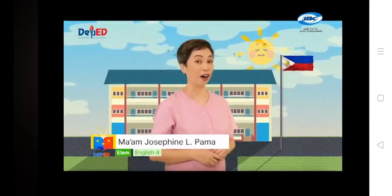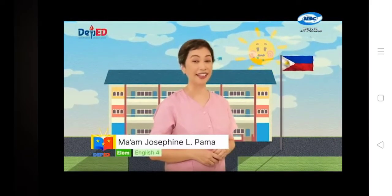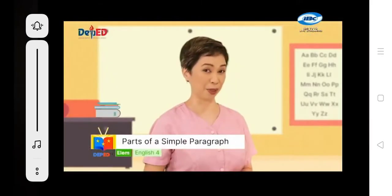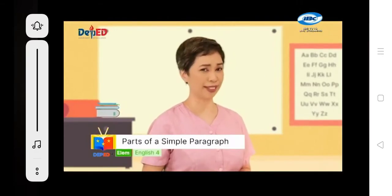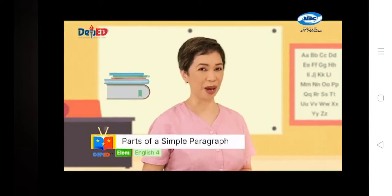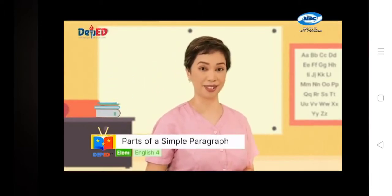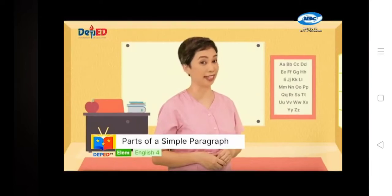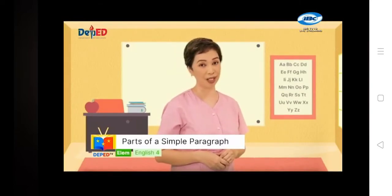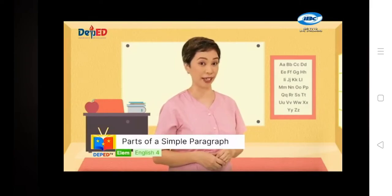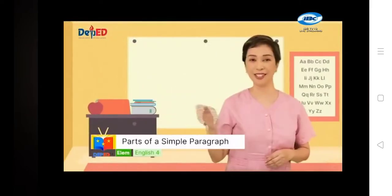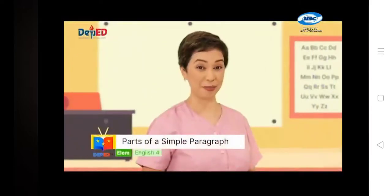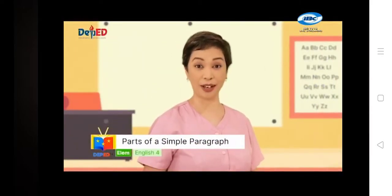Hello there, children! Are you ready for another fun-filled learning? This is Teacher Jo teaching you English. Do you still remember what we read last time? We read something about books. What we read are called paragraphs. A paragraph is made up of sentences that focus on a single idea. We can find paragraphs in newspapers, textbooks, and even in our favorite children's stories. Now let us try to identify its parts.